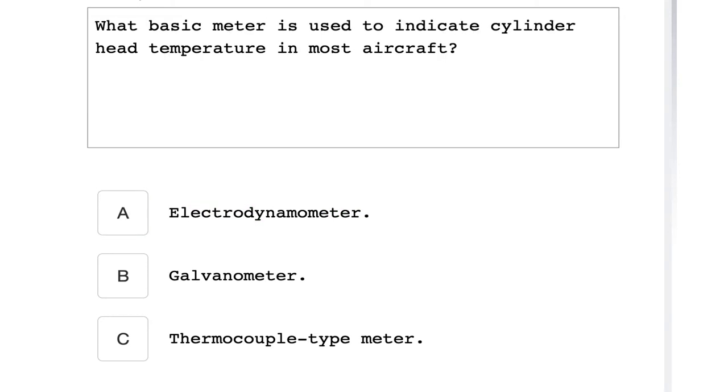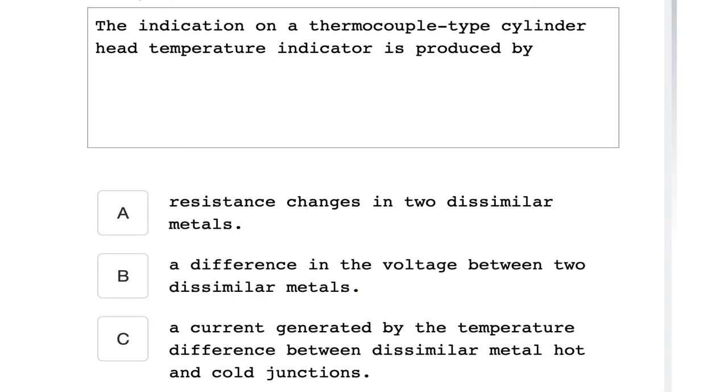The basic meter used to indicate cylinder head temperature in most aircraft is a galvanometer. The indication on a thermocouple type cylinder head temperature indicator is produced by a current generated by the temperature difference between dissimilar metals, hot and cold junctions.